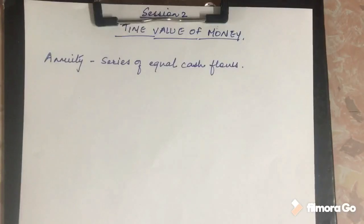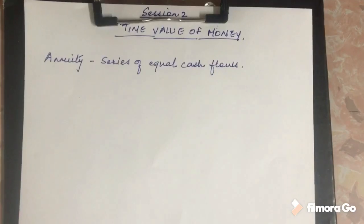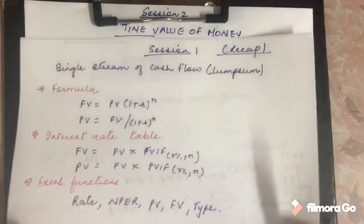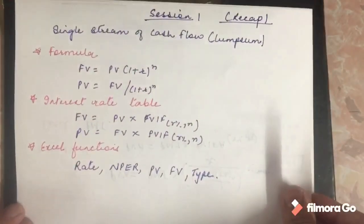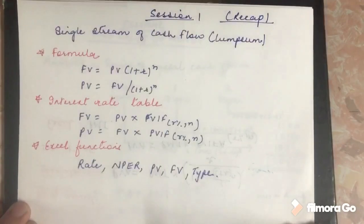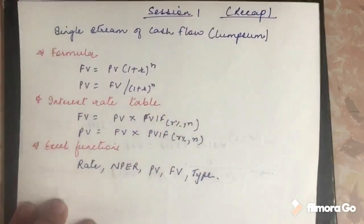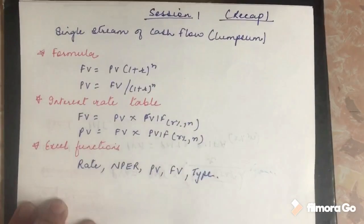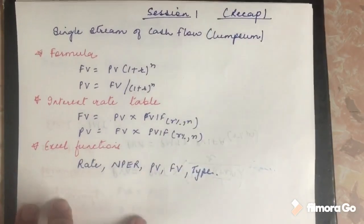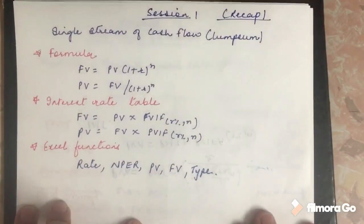Hello students, we will proceed further with our basic concept of time value of money in session 2. In this session we will be studying about the annuity, which is a series of cash flows. But before going further, let us quickly revise and have a recap of what we have done in session 1, where I explained the concept of time value of money and how to find the present value from a future value or a future value from a present value, and the application of such calculations in finance or analysis.